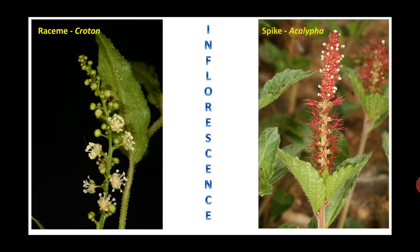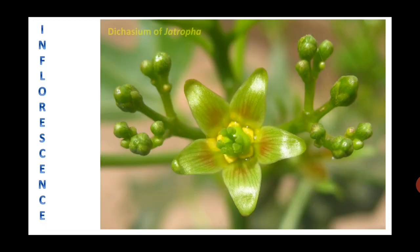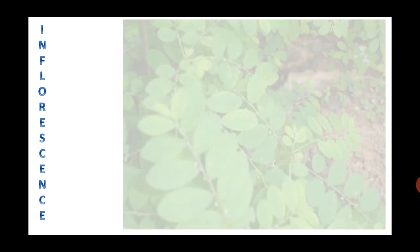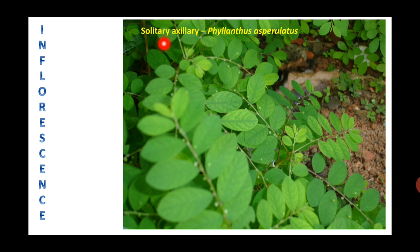Great variety of inflorescence is found in Family Euphorbiaceae. Raceme type of inflorescence is found in Croton. Spike type is found in Acalypha. Dichasium is found in Jatropha — in a dichasium the oldest flower is at the terminal end and from below, younger flowers originate and bifurcate. Inflorescence is solitary axillary in Phyllanthus asperulosus, where single flowers are found.